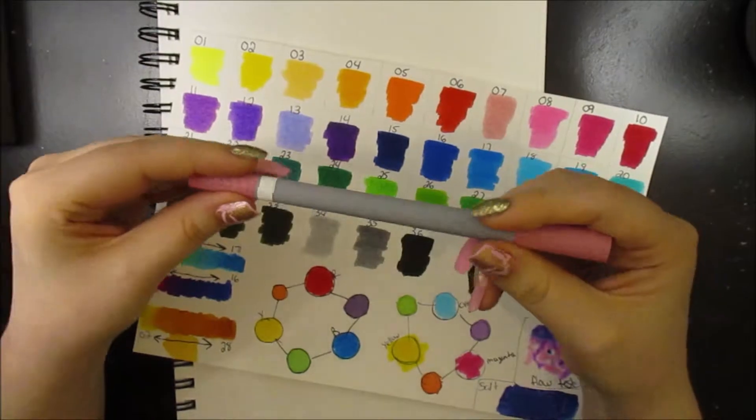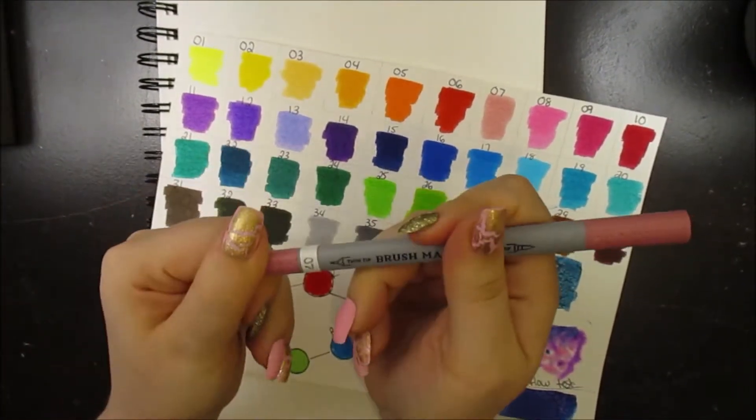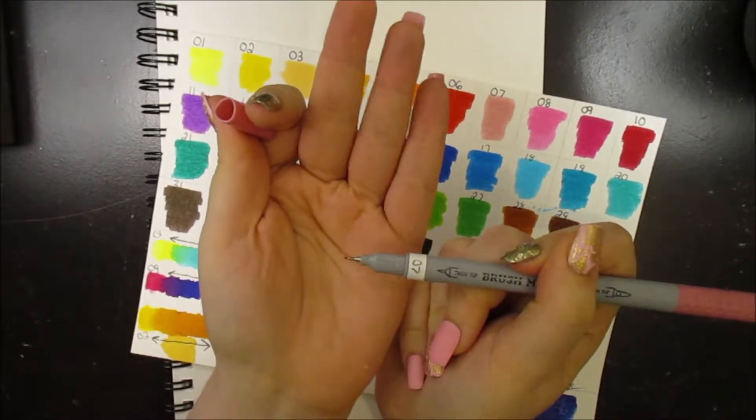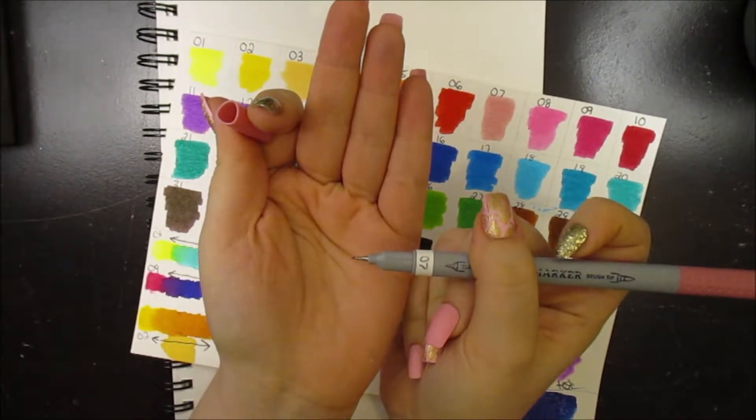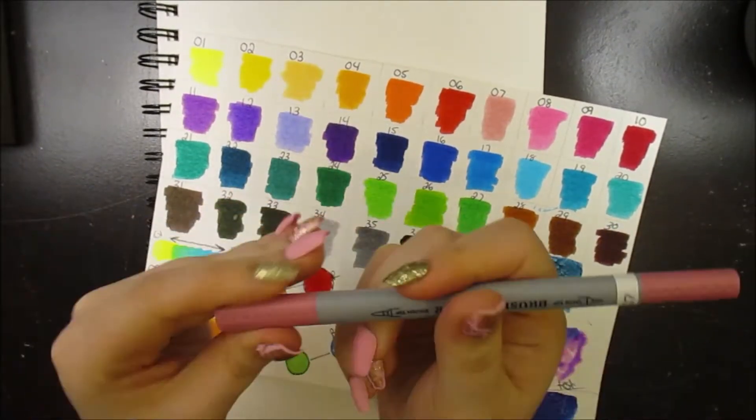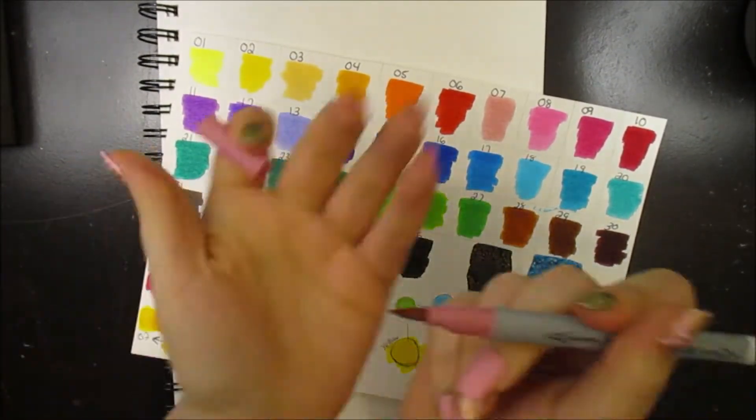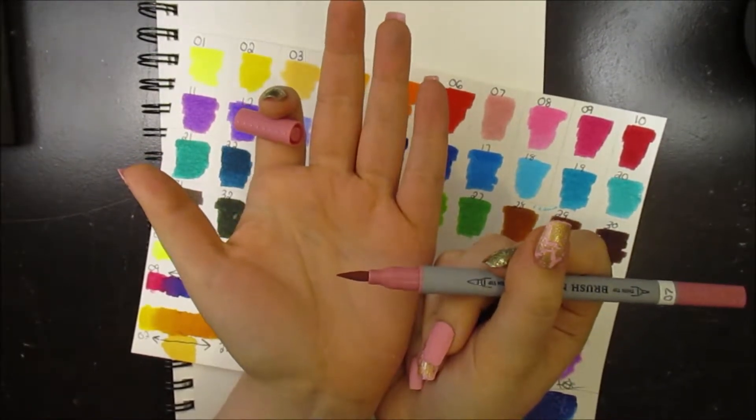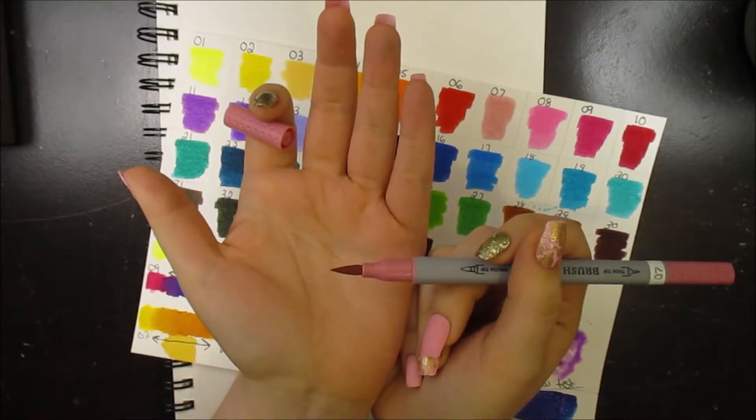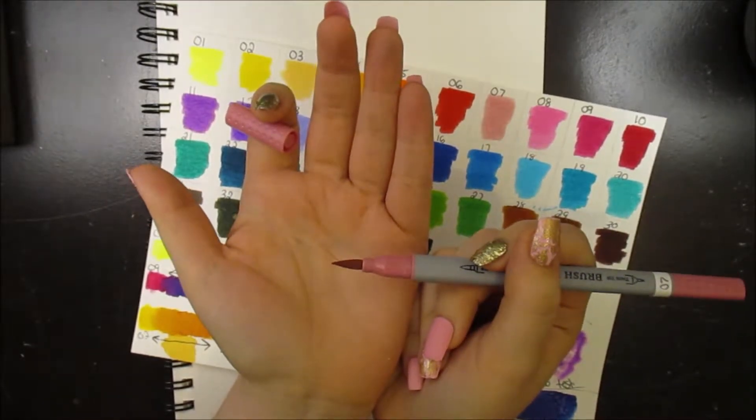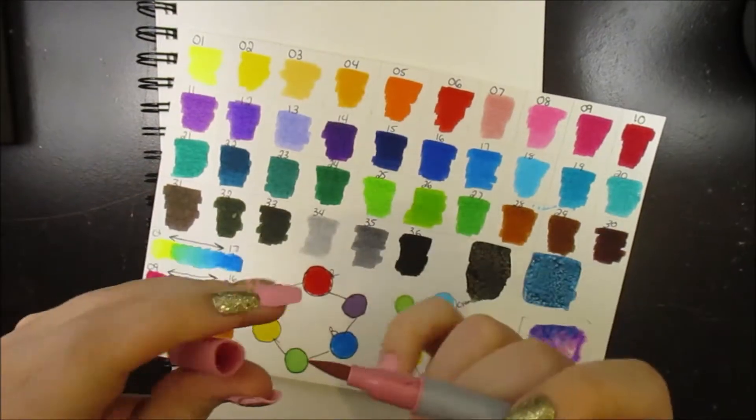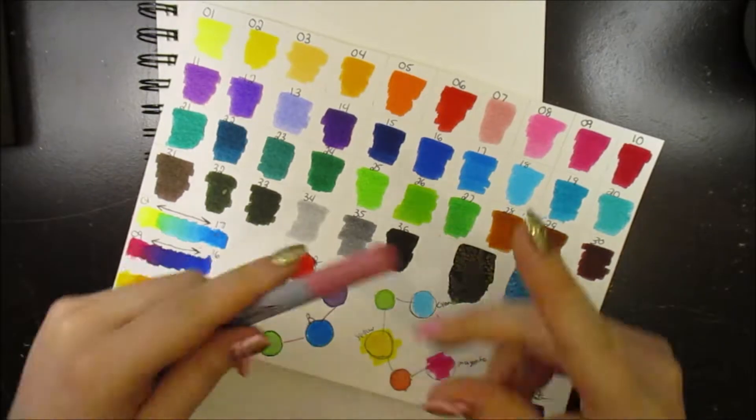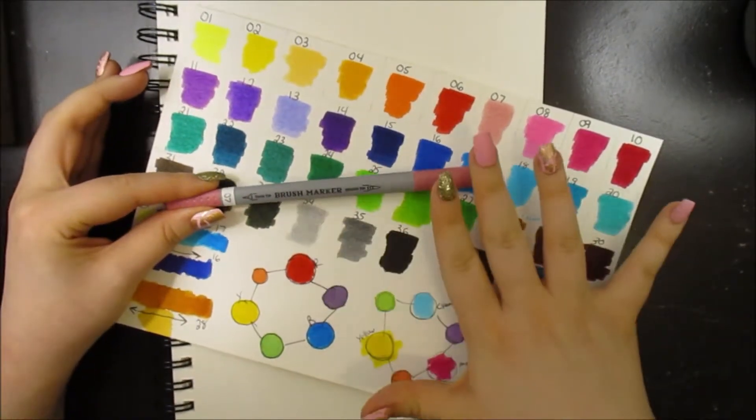What we're looking at here for these markers is on one end, you have a thin tip, very similar to a micron pen or a Sharpie thin tip or fine tip type of a pen. And on the other end, you have a pretty decent quality brush tip. It's not going to be as nice of a quality as like a Copic or a Prismacolor Premier marker tip. It's not a foam tip like those higher quality ones. It's more of a felt tip or something like that. They're not the best quality. Absolutely not.